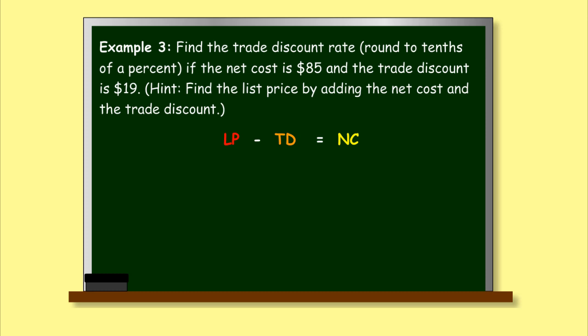Example 3. Find the trade discount rate if the net cost is $85 and the trade discount is $19. Hint. Find the list price by adding the net cost and the trade discount.